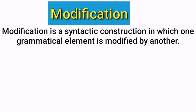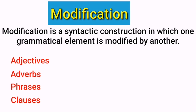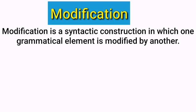There must be a question in your mind: what can be included in modification? Modification encompasses all words that modify other words in a sentence. This includes adjectives, adverbs, phrases, and clauses, etc. By these words we can modify some grammatical elements in a sentence — that is, we can add more information to some grammatical units or add additional information to such elements.